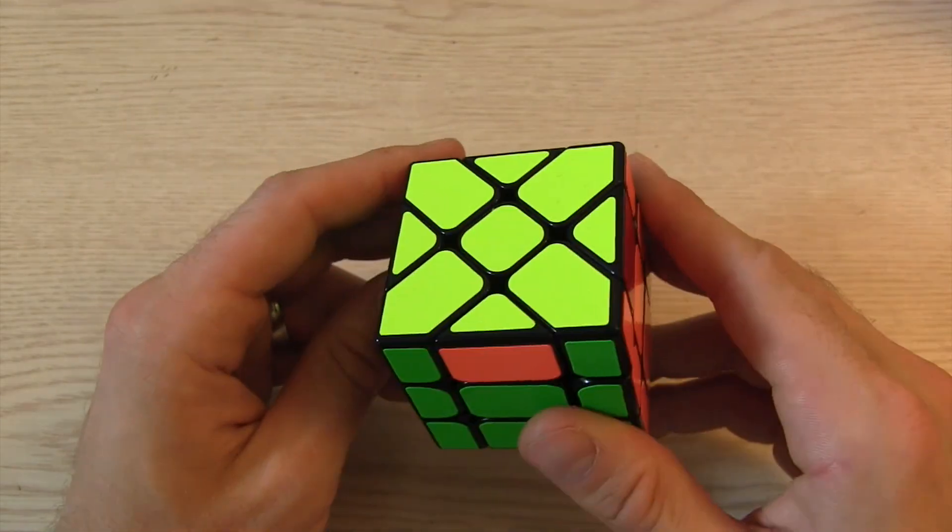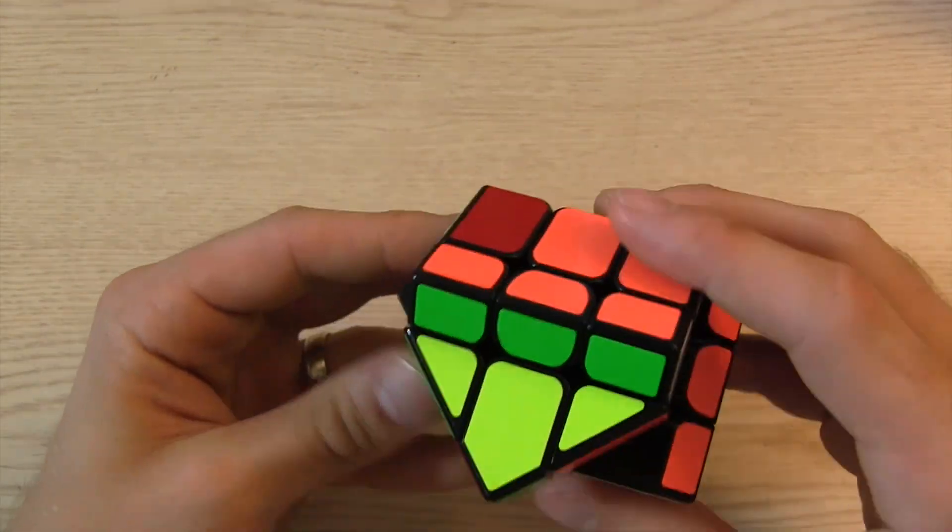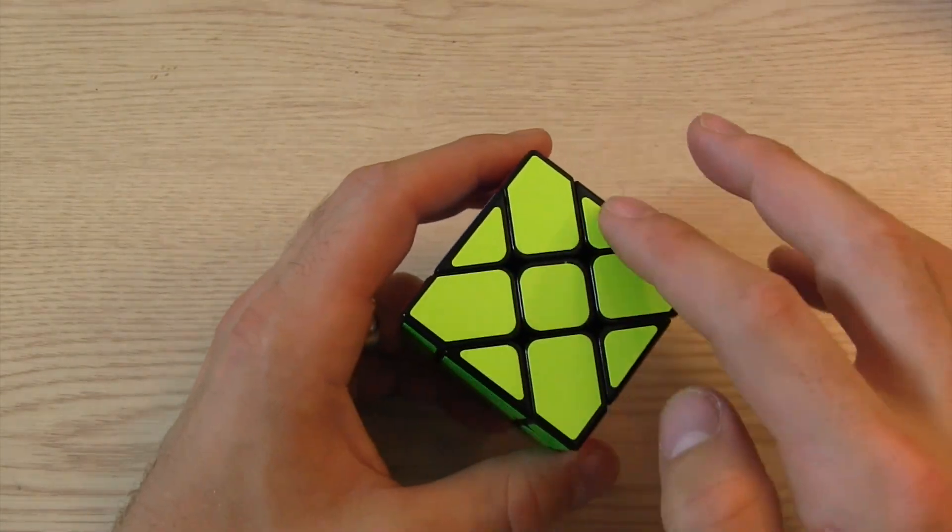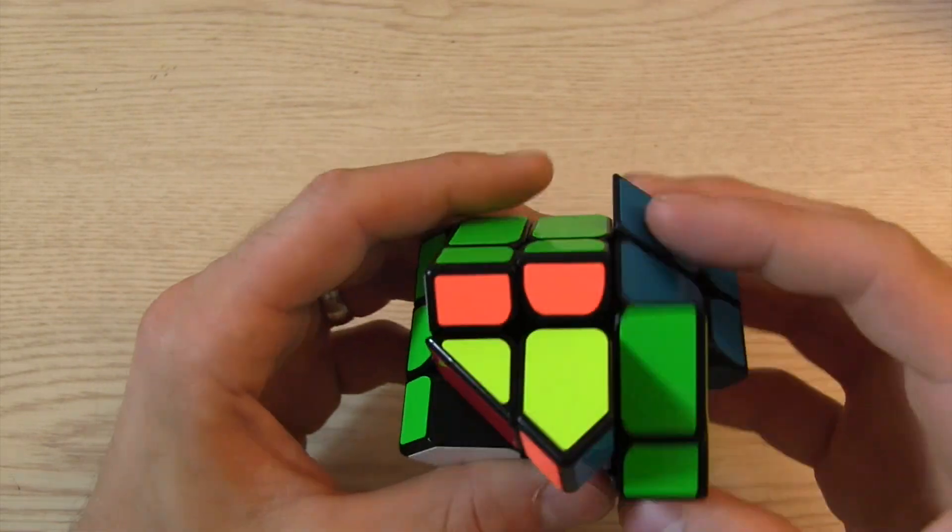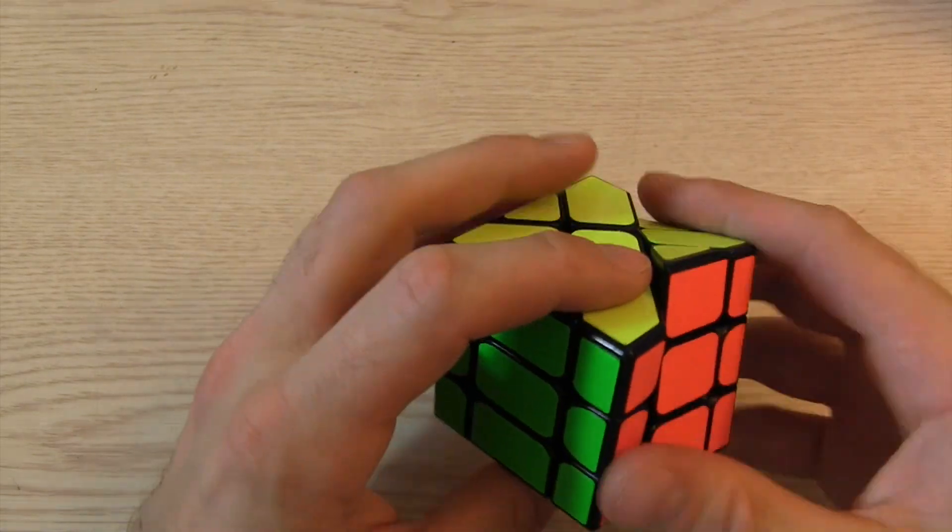So I believe it is this one. Nope. Now there's the A permutation. So that goes there, that goes here, this goes here. There we go.